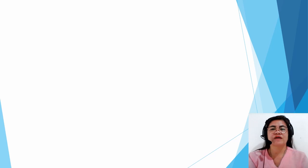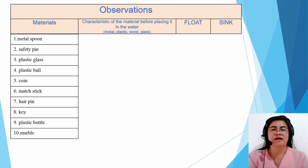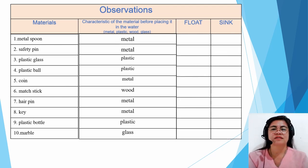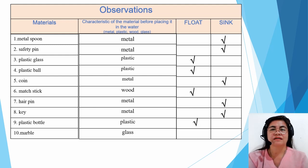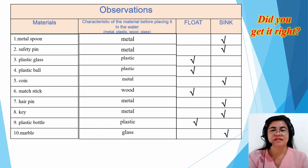Here is our observation chart. Let us check whether we have the same answers. Metal spoon — made of metal — sink. Safety pin — made of metal — sink. Disposable glass — made of plastic — float. Plastic ball — plastic — float. Coin — made of metal — sink. Matchstick — made of wood — float. Hairpin — made of metal — sink. Key — made of metal — sink. Plastic bottle — made of plastic — float. Marble — made of glass — sink. Did you get it right?